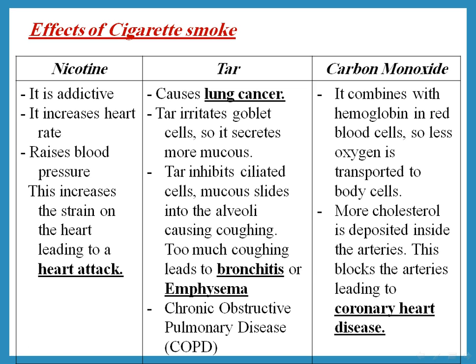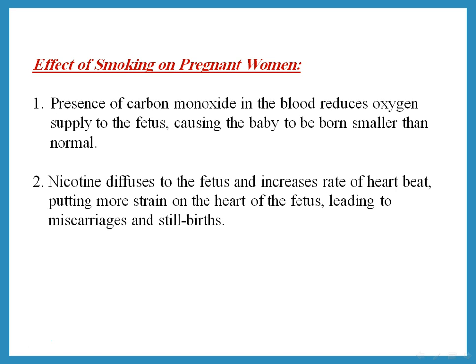Carbon monoxide from cigarette smoke combines with haemoglobin in red blood cells, so less oxygen is transported to body cells. It also causes more cholesterol to deposit inside the arteries, blocking them and leading to coronary heart disease. So nicotine and carbon monoxide both affect the heart, while tar causes lung cancer. Pregnant women should not smoke because carbon monoxide reduces oxygen supply to the fetus, resulting in babies born smaller than normal.